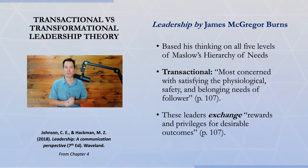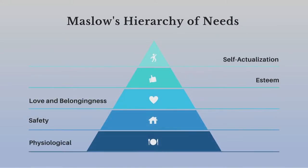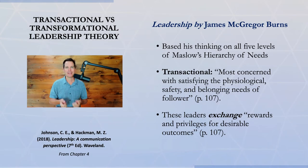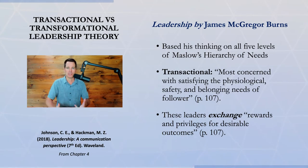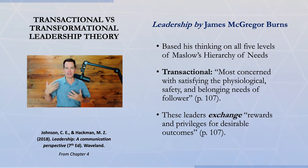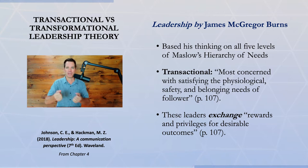James McGregor Burns wrote a book called Leadership, and he looked at these two leadership styles using Maslow's hierarchy of needs, which has five levels. He said that transactional leaders are really in the business of helping followers meet the three lower-level needs — psychological, safety, and belonging. It's an exchange: the leader pursues these rewards in return for good performance and good outcomes, and may withhold support for these needs if performance is poor.